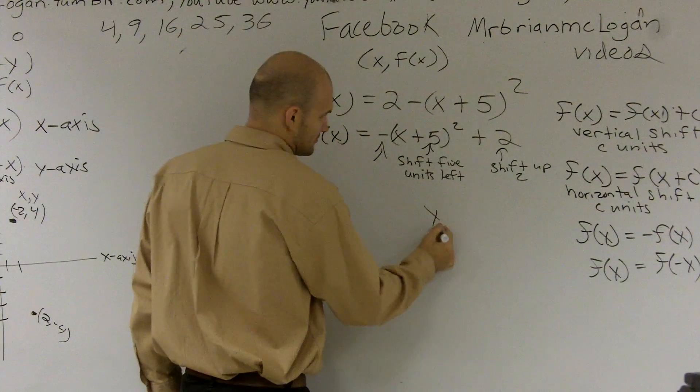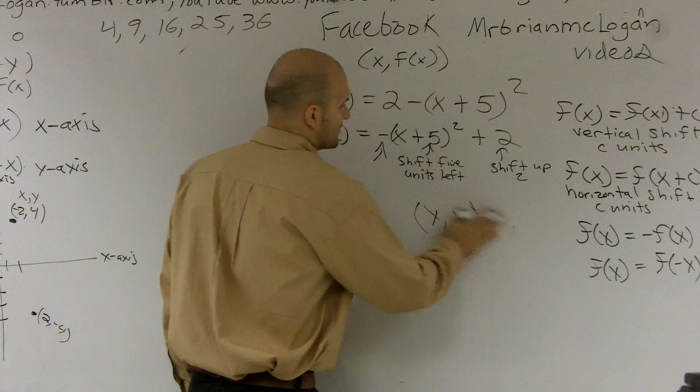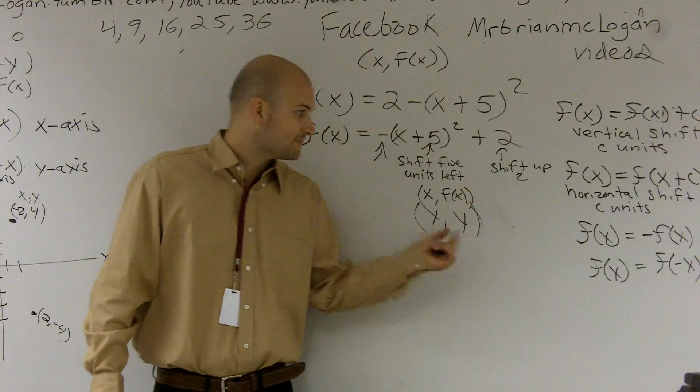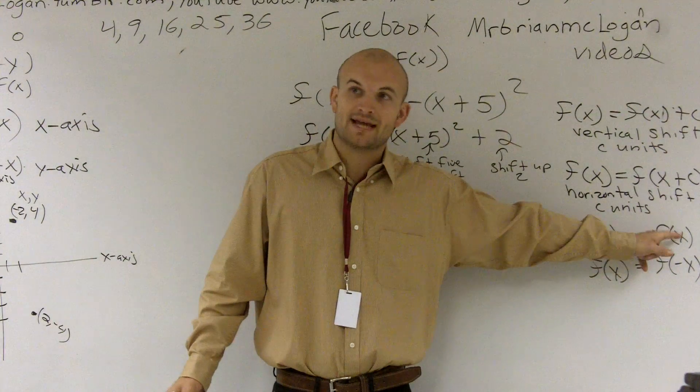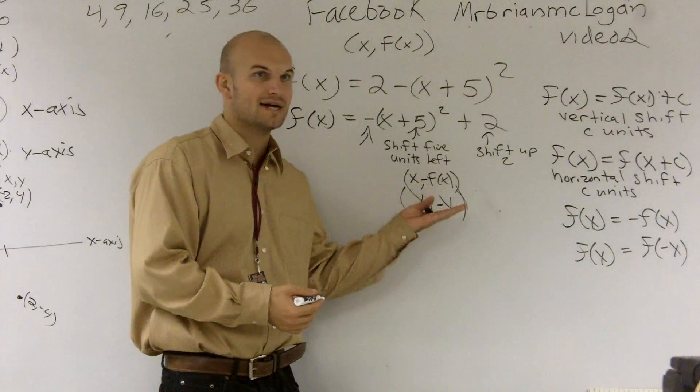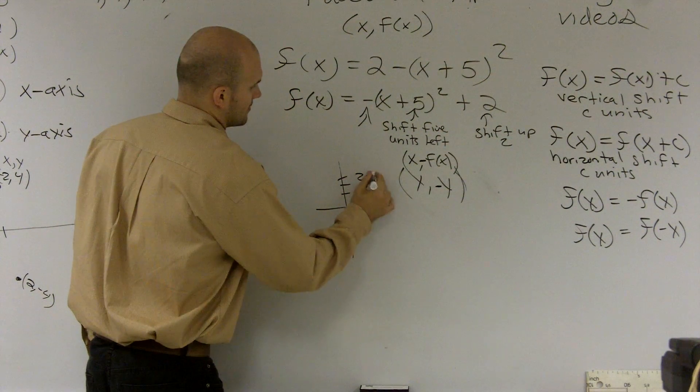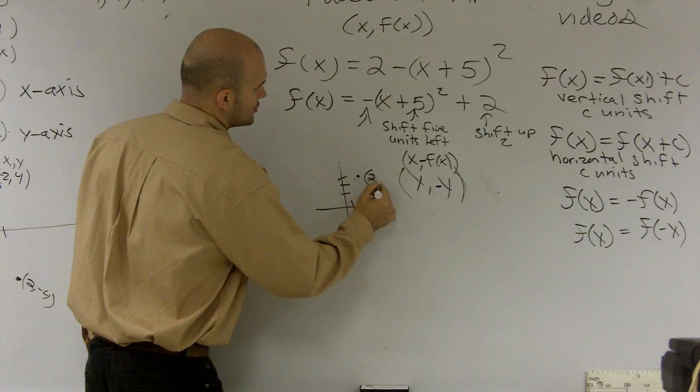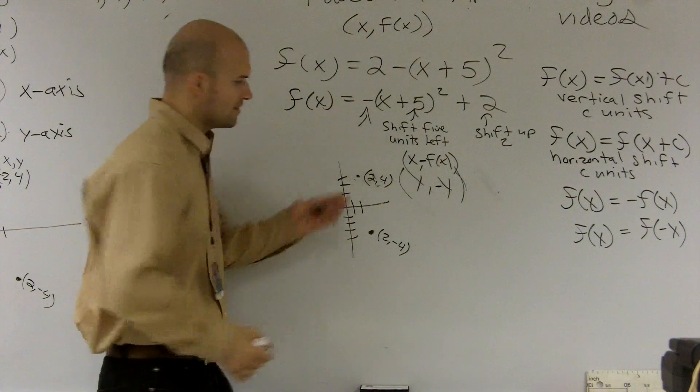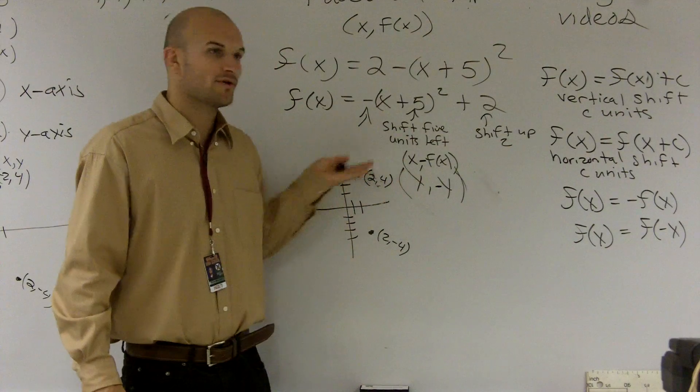If you guys have a coordinate point, and remember that's the same thing as x, f(x) because we're dealing with functions. But if you guys think of a coordinate point as x and y, if I make my negative f(x), if I make this point negative, what that does is that's the same thing as making my y coordinate negative. So what that's going to do is instead of it being positive, so if my coordinate point was (2, 4), now my coordinate point is going to be (2, -4). So what it did was it reflected about the x-axis. So when I make my f(x) negative, that's going to be a reflection about the x-axis.